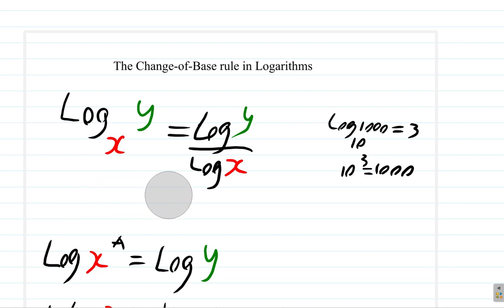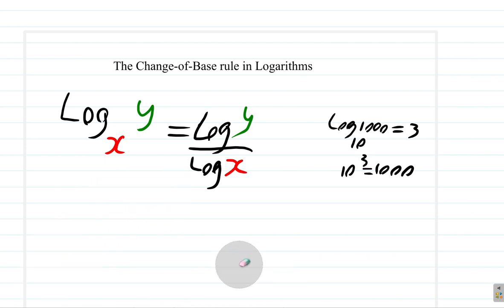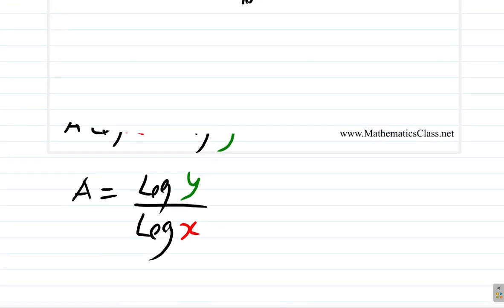Let me write out the change of base rule clearly. The log of a number with a certain base equals the log of that number in a new base divided by the log of the original base in that new base — for example, base 10. So log_x(y) equals log base 10 of y over log base 10 of x. Let's try it on a few numbers and see if it really works.